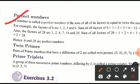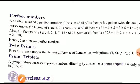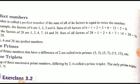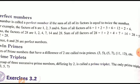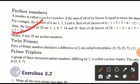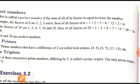A number is called a perfect number if the sum of all its factors is equal to twice the number. For example, the factors of 6 are 1, 2, 3, 6 and their sum is 1 + 2 + 3 + 6 = 12 = 2 × 6, so 6 is a perfect number. Similarly, the factors of 28 are 1, 2, 4, 7, 14, 28 and 1 + 2 + 4 + 7 + 14 + 28 = 56 = 2 × 28, so 28 is also a perfect number.